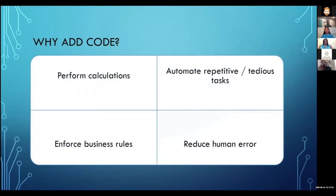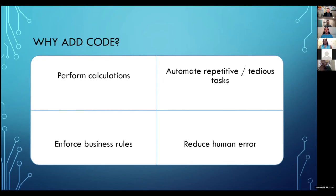Why do you want to add code to your base? Code can do some really great things. Not only can code do calculations — that's what we normally think of — it can process numbers and also do calculations on text as well. You can use it to automate repetitive tasks: anything that's really tedious, where you have to do things over and over again, just have code do that for you. And that will also help you reduce human error.